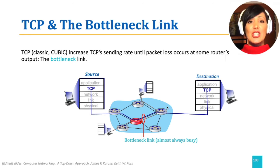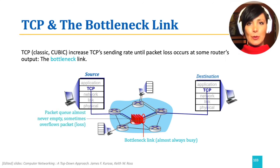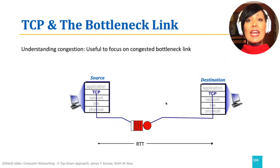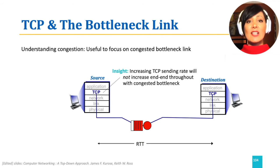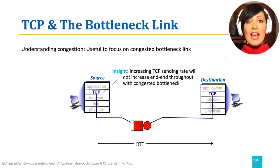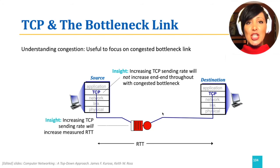Note that congestion happens in the bottlenecks of the network. These links are almost always busy due to high usage from different sources. When bottleneck links are busy, increasing the sending rate will not result in increased end-to-end throughput. This is because more segments have to go through the same bottleneck, and therefore they have to wait more for the bottleneck to be available for them. Therefore, changes in the sending rate of TCP do not have an effect on the capacity of the bottleneck.